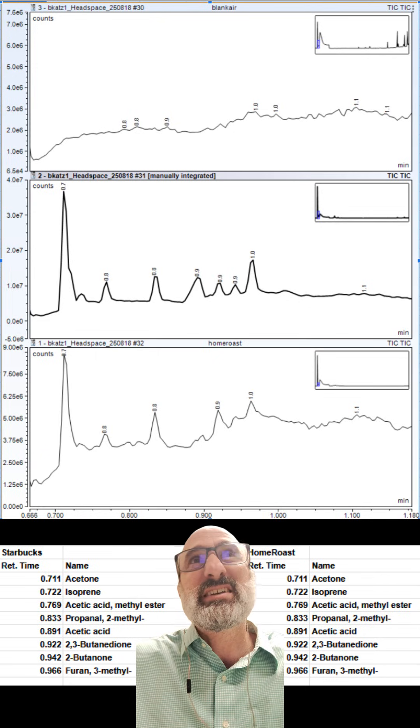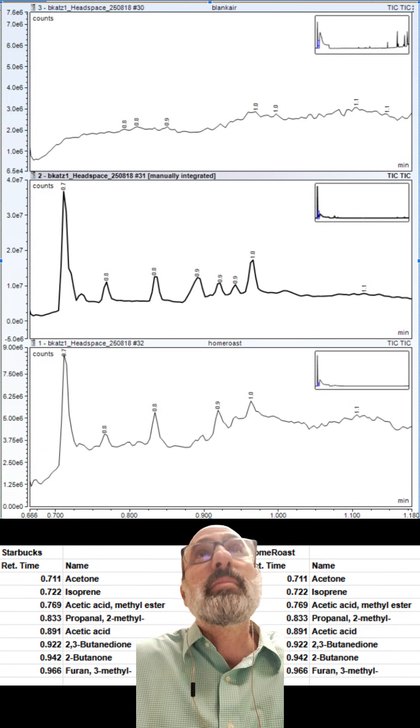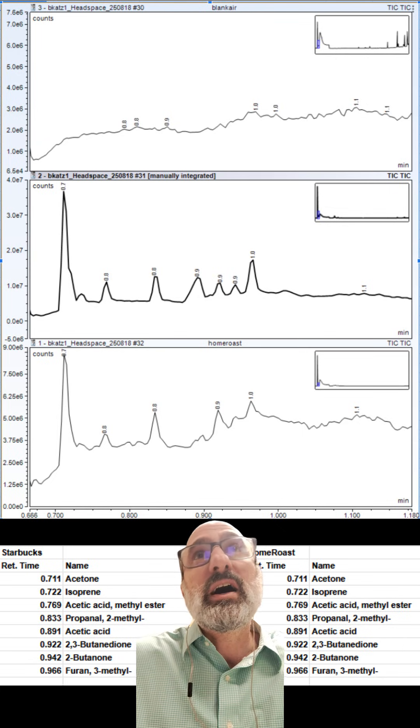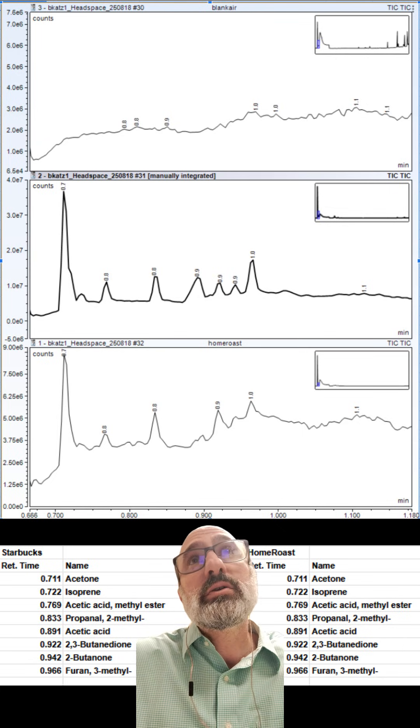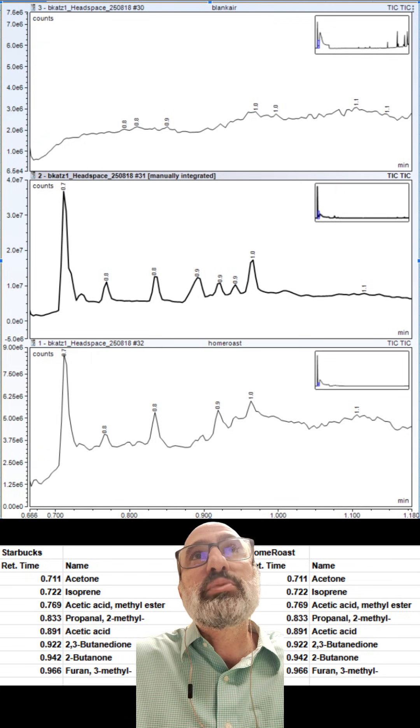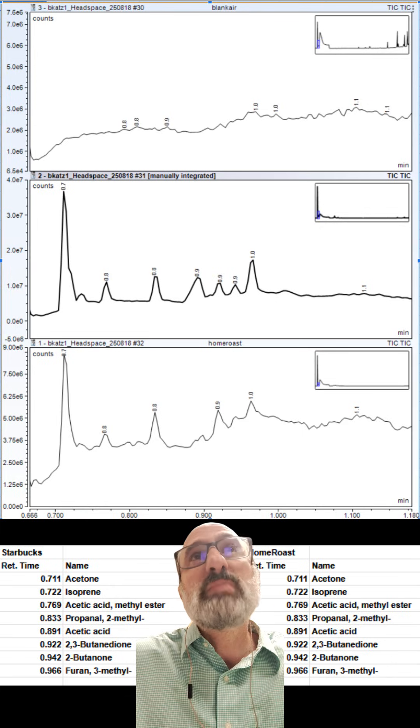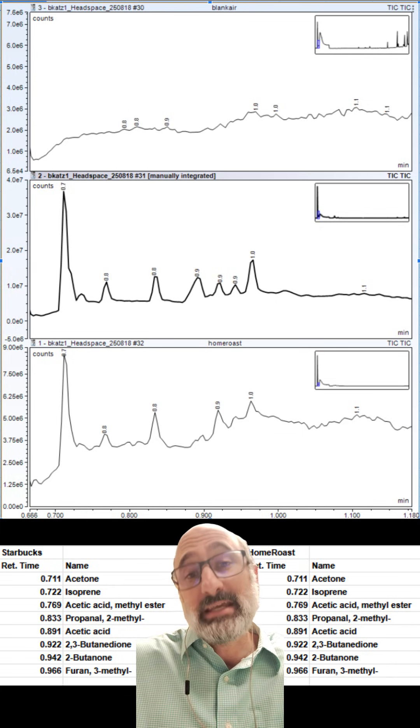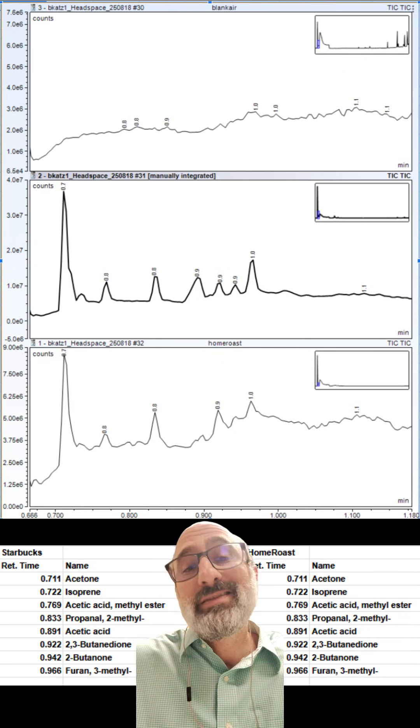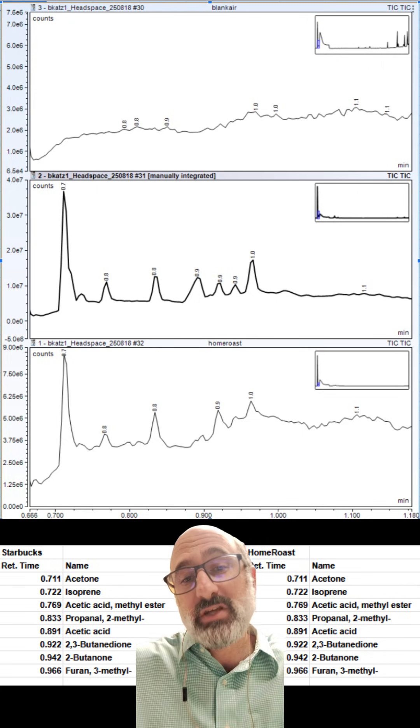The first thing I'm kind of surprised to find is there is acetone at a pretty small level, but a noticeable peak in the coffee. So that is a small ketone, the smallest ketone in coffee. We also have isoprene, acetic acid methyl ester, 2-methyl propanol, acetic acid, butadione, and butanone. And then we start getting into some of these furans, which are the flavors.